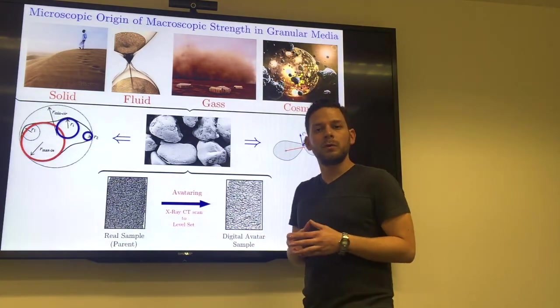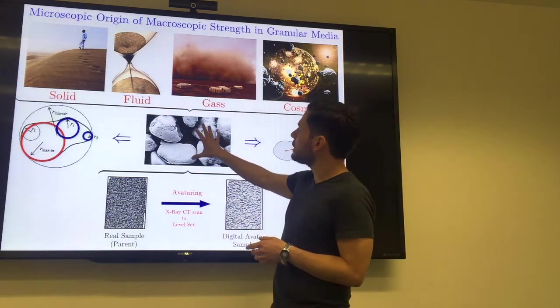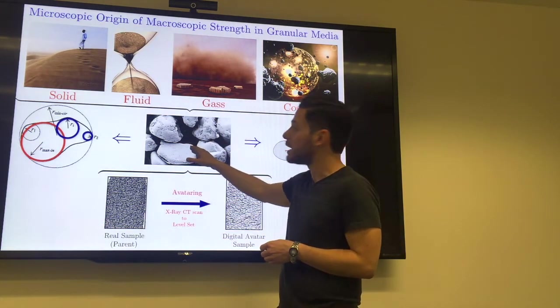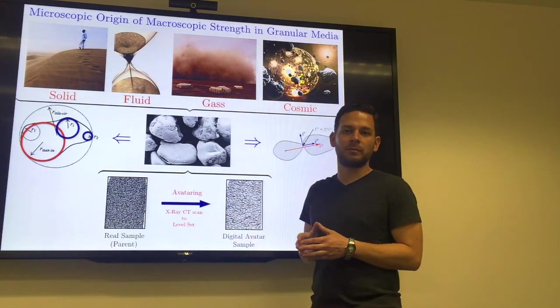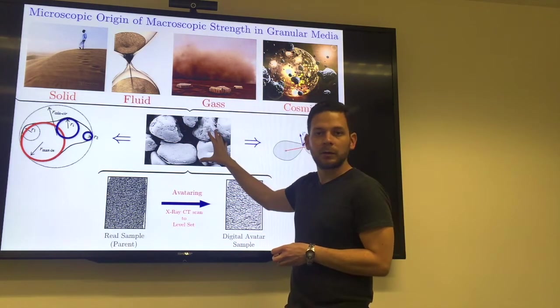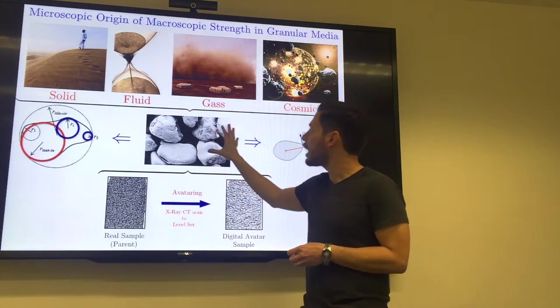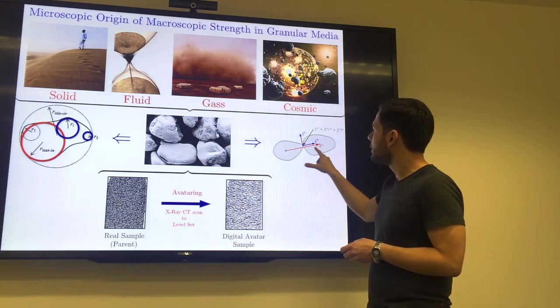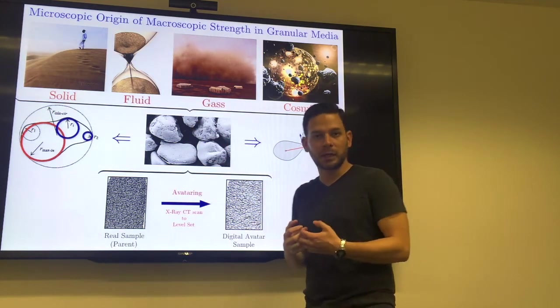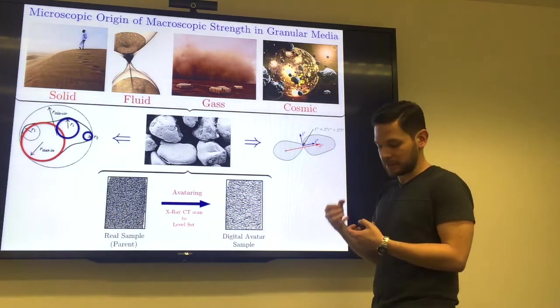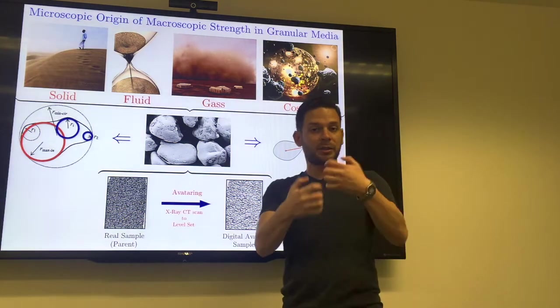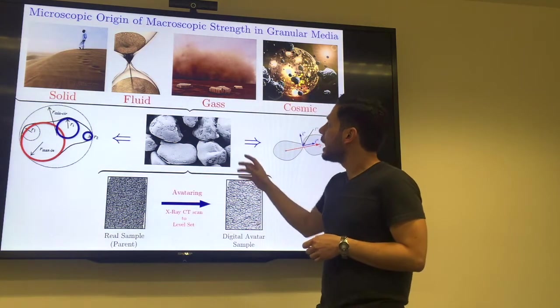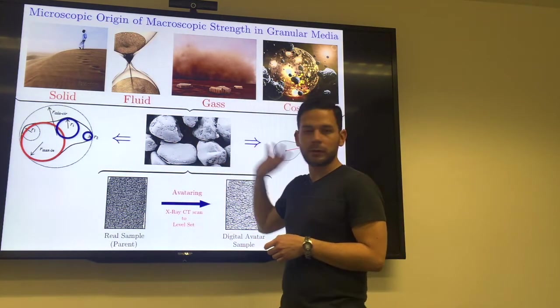What I do is try to link the grain-to-grain level to the macroscopic or bulk behavior of these materials. At the micro or grain-to-grain level, we have these grains interacting among them with contact forces. They exert force on each other. They also have inter-particle friction, and they change in shape from grain to grain.